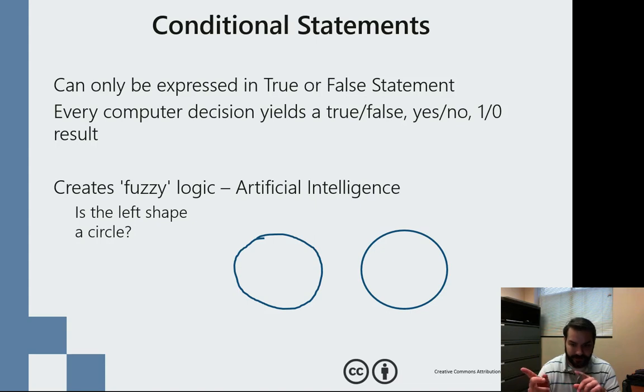So, for example, take a look at these two circles. Well, do you agree that the one on the left is a circle? You might say yes, it is. No, it's not. But at what point in time do we no longer classify it as a circle?